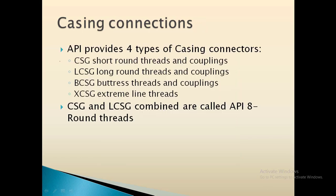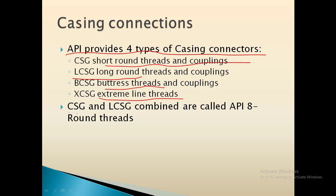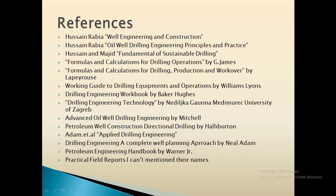According to API, there are four types of casing connections: short round thread and coupling (STC), long round thread and coupling (LTC), buttress thread and coupling, and extreme line thread. STC and LTC are combined and called API eight-round threads, meaning there are eight threads per inch in the casing.